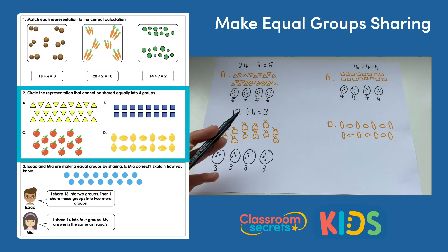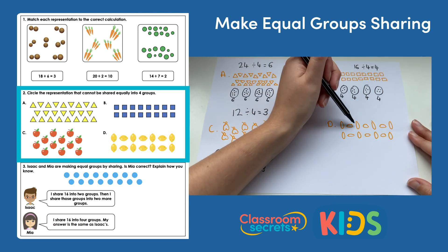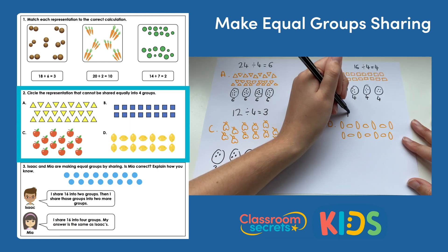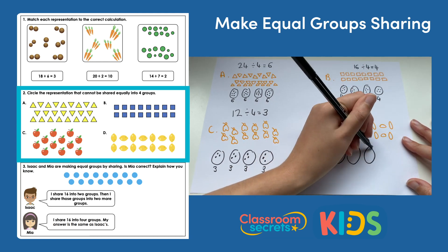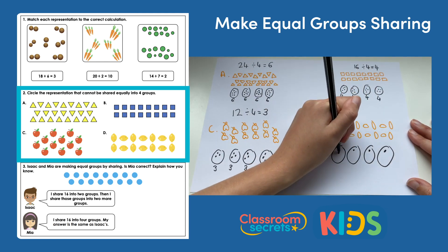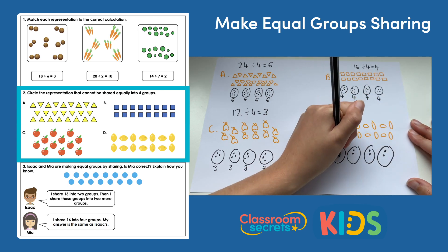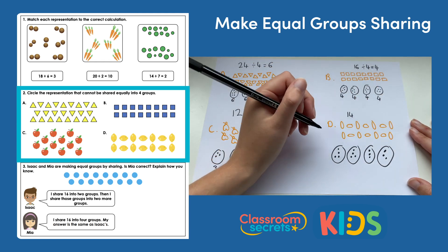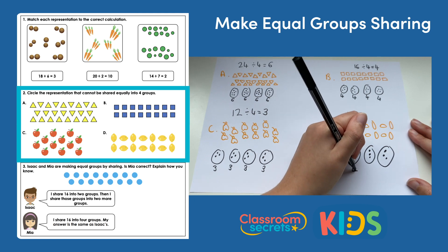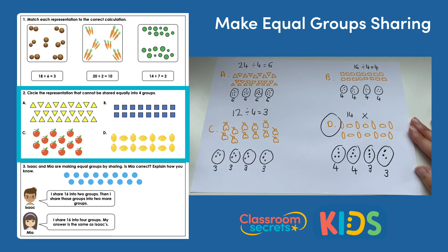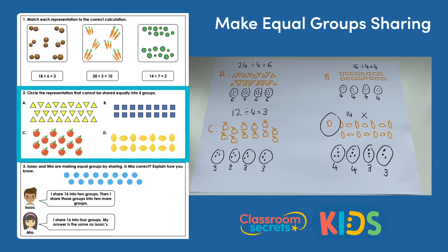We're looking for the one that can't be shared, and the rest can be shared, so I'm thinking this one can't — but we need to prove it. Let's count up our lemons: fourteen. Let's try and share them into four groups. I can see that my groups aren't equal because I've got four and four but then three and three. So I cannot share D into four equal groups, and D is my answer.